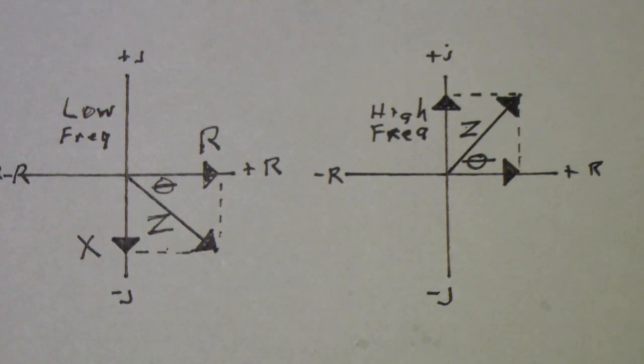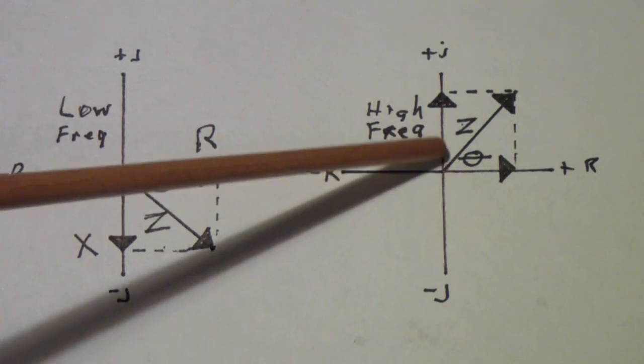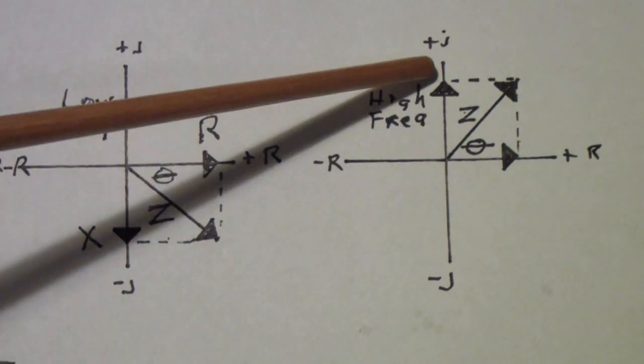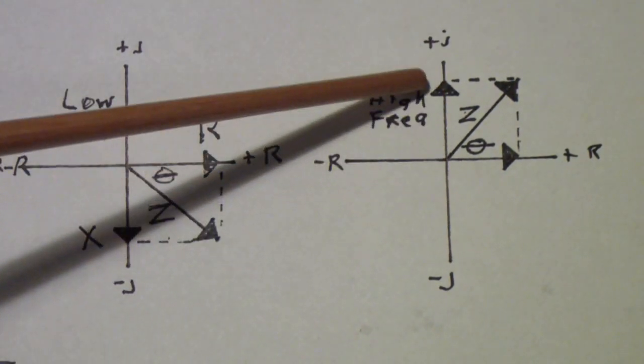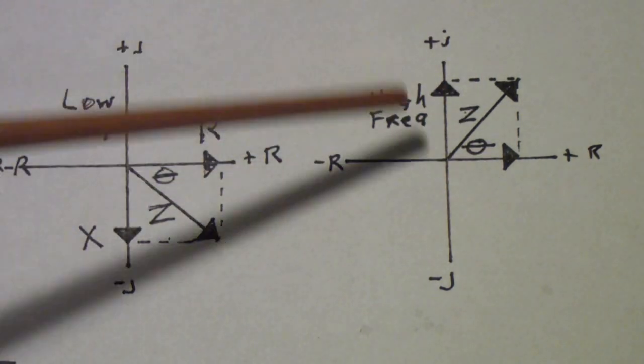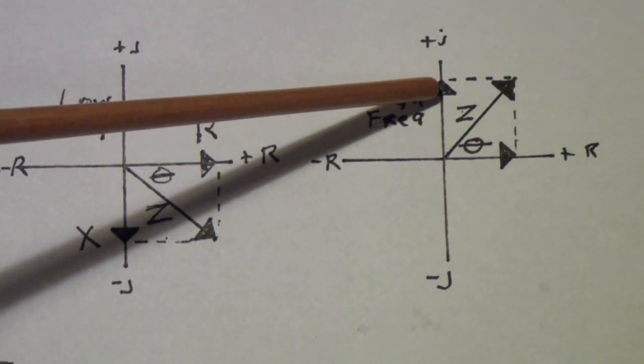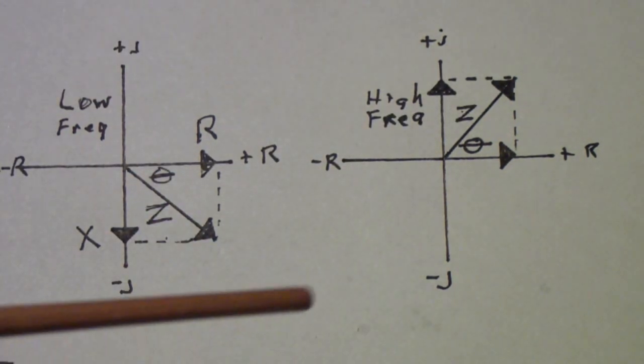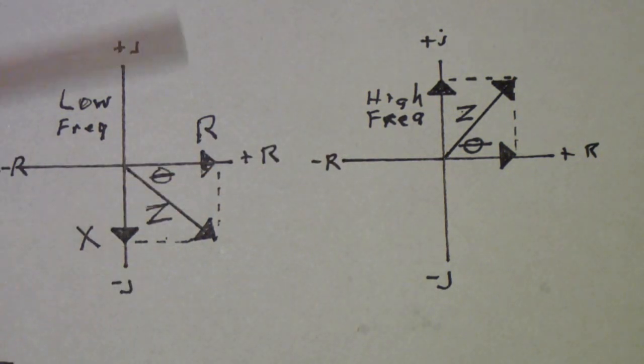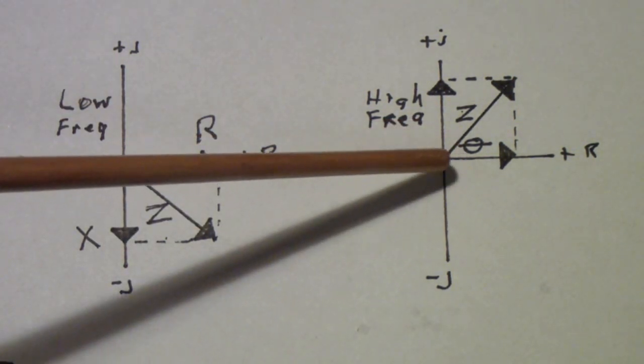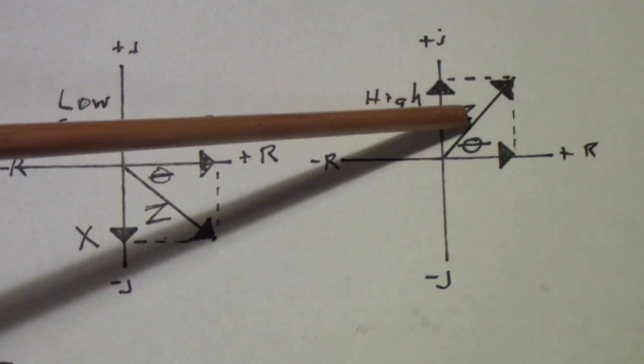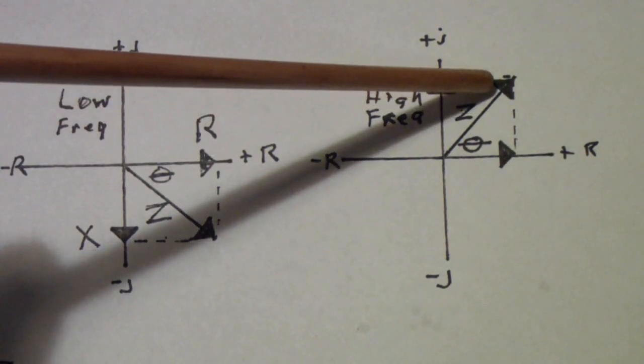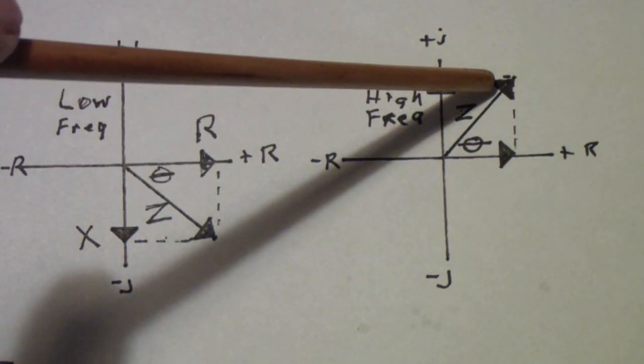Similarly, in a high frequency circuit, it's the inductance that tends to dominate. Once again, if you have a circuit with an inductor and a capacitor in it, the inductor becomes a bigger and bigger factor. The capacitor tends to become a smaller and smaller factor, or at least a smaller and smaller impedance. And at high frequencies, you get just the opposite diagram. In other words, instead of being down in the lower right quadrant, you have the impedance in the upper right quadrant.